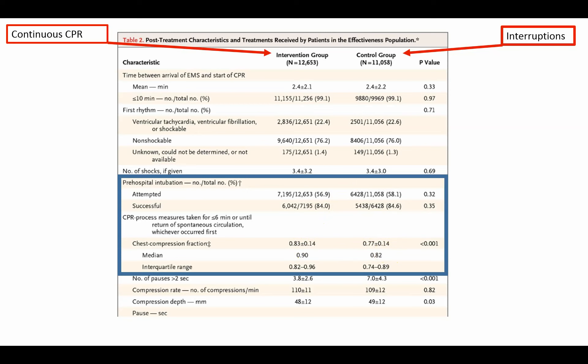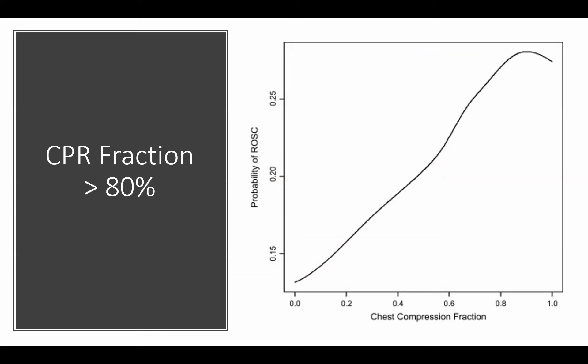It should be noted that this study was performed by an EMS system that had already implemented pit crew and high performance CPR, so they were very skilled at resuscitation and their breaths were probably kept very short. We want a CPR fraction greater than 80%. Ideally we want to get it up to 90% where it sort of plateaus. The national standard is greater than 80% time performing CPR; our internal goal is 90%. I believe we can get there and we have quite a few teams that have already done that.